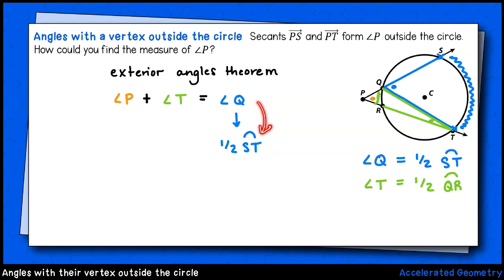So in my equation, I'll replace the angle Q with its equivalent value, one-half ST. We then looked at angle T and found that it too intercepts an arc on the circle. By the inscribed angles theorem, angle T is equal to one-half the measure of the intercepted arc QR. So I'll replace angle T with one-half QR, its equivalent value.